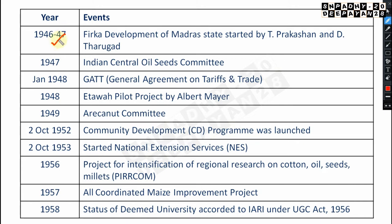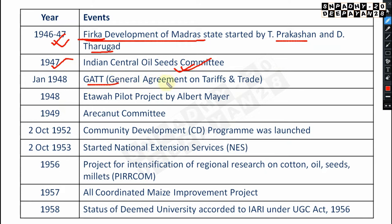From 1946 to 1947, the Firka Development Scheme of Madras State was started by T. Prakasam and D. Tharkad — very very important. In 1947, the Indian Central Oilseeds Committee was formed. In 1948, GATT — General Agreement on Tariffs and Trade — was established.